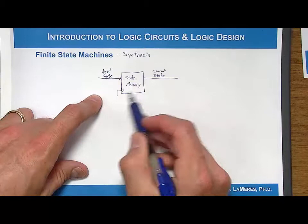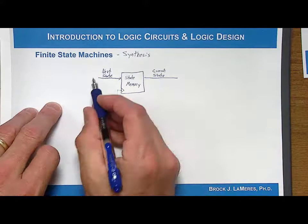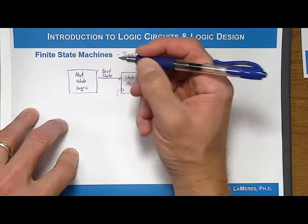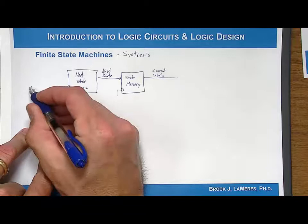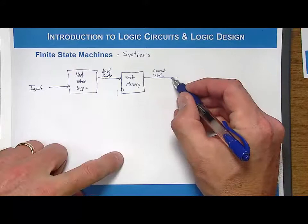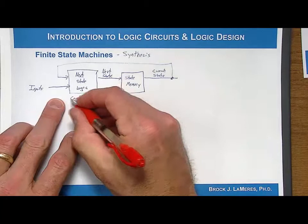We need something to produce the next state code, and that's a block called next state logic. The inputs to next state logic include any inputs into the system, but it also needs to know where you're currently at. So the current state needs to be fed back into the next state logic — that's the feedback characteristic of a finite state machine. Next state logic is combinational logic — nothing more than sum of products or product of sums. There's no storage in here; state memory is the bunch of D flip-flops that hold the state codes.